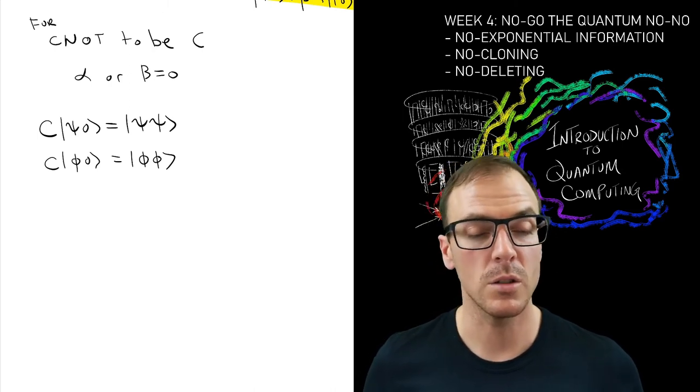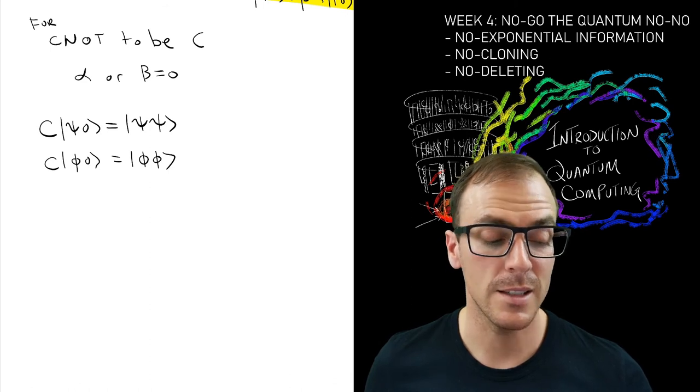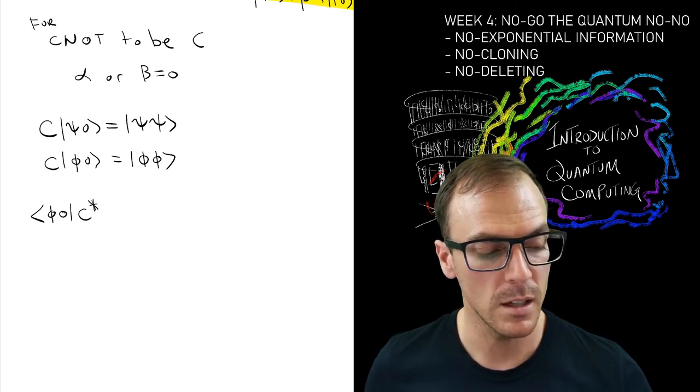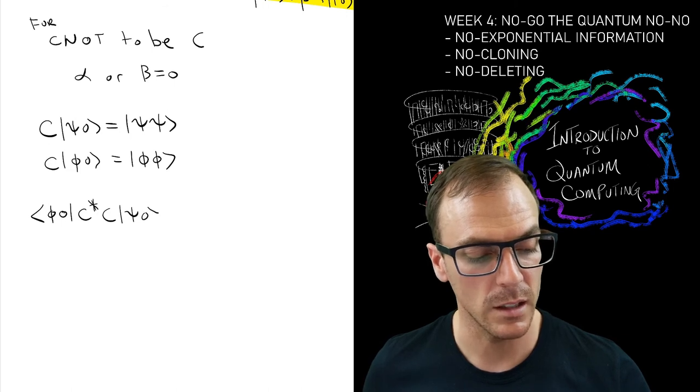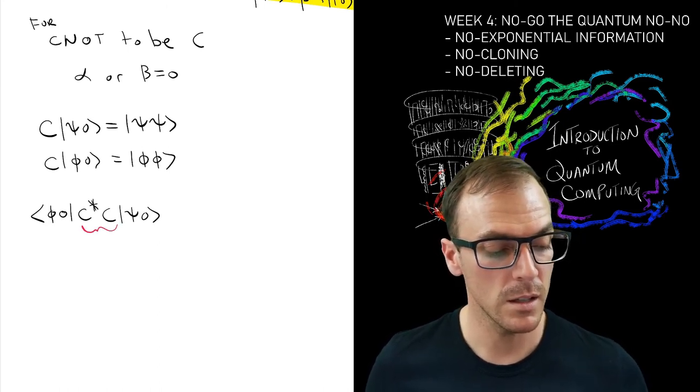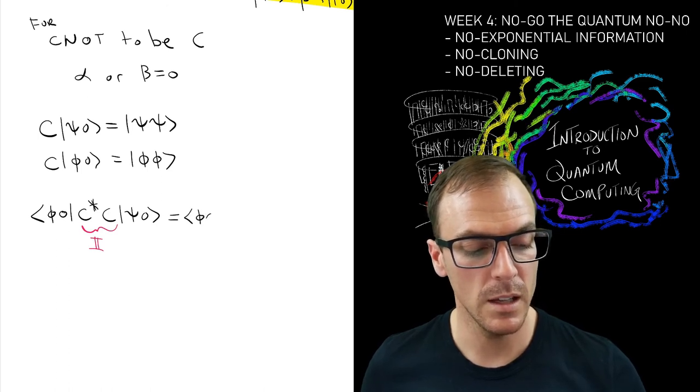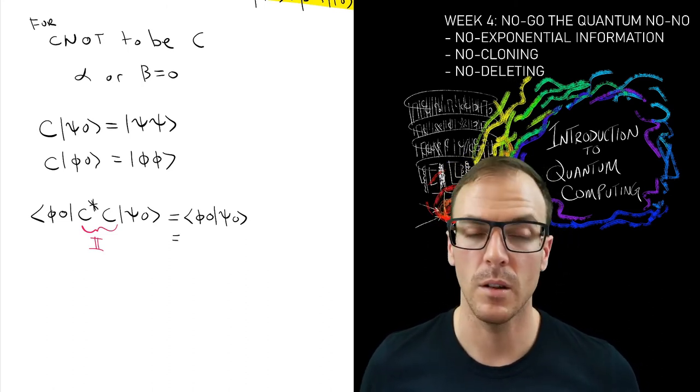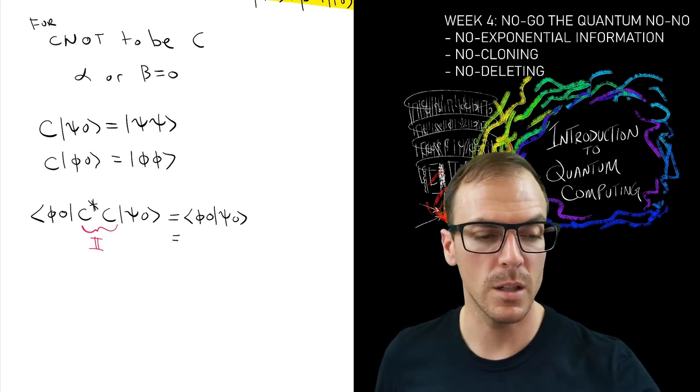So the CNOT maybe doesn't work. Let's ask: what about some other arbitrary operation C that takes |ψ⟩|0⟩ and produces |ψ⟩|ψ⟩, and it has to do that for any state? So it also has to do it for some other state |φ⟩|0⟩ which will go to |φ⟩|φ⟩. What we can do is check: what is the inner product between the states on the left-hand side and the right side? If these two equations hold, then the inner products must match.